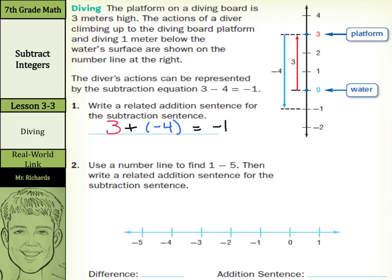So three minus four equals negative one is the same thing as three plus negative four equals negative one. I guess so.